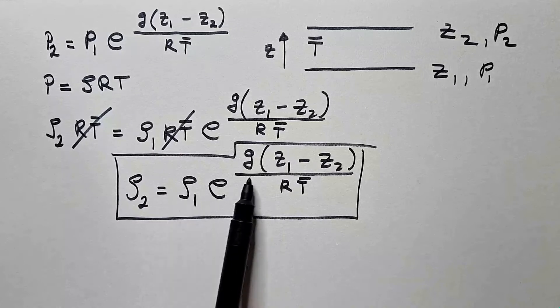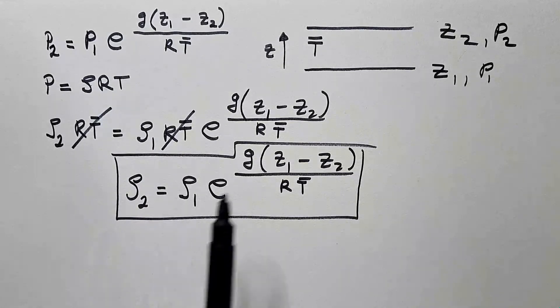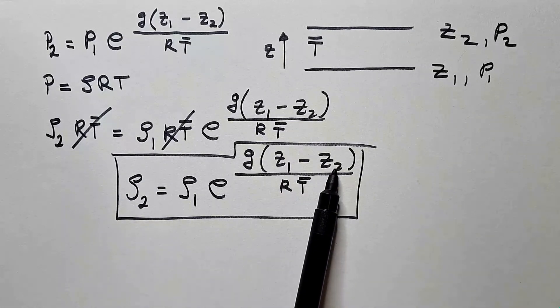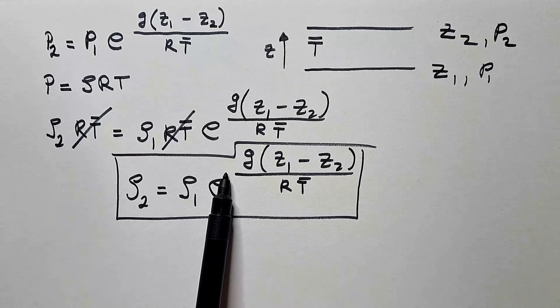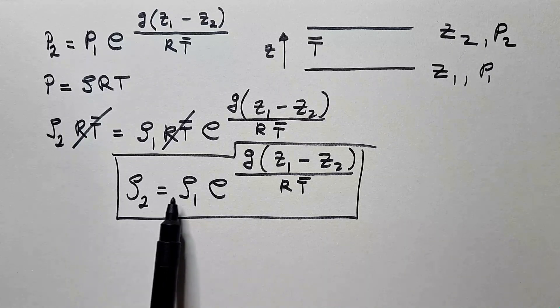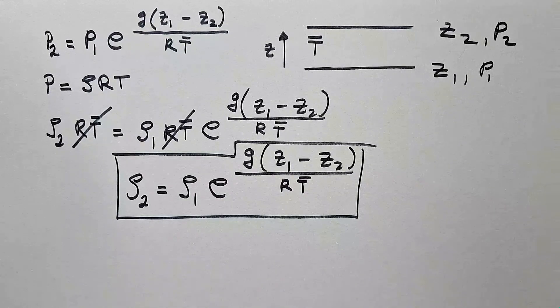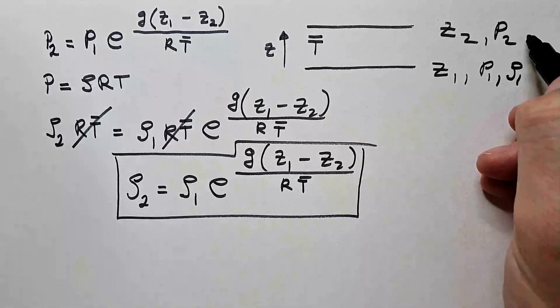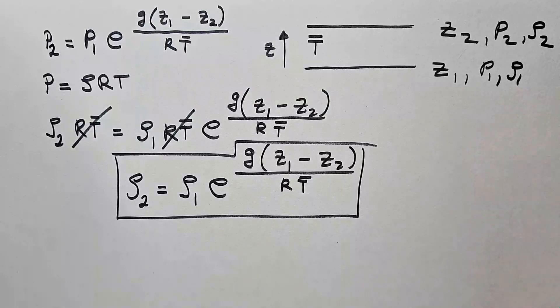Why is it decreasing? How do we see in this equation it is decreasing? Because Z1 is smaller than Z2, that means this whole thing is negative, which means rho 2 will be smaller than rho 1. So, here is rho 1, and here is rho 2.